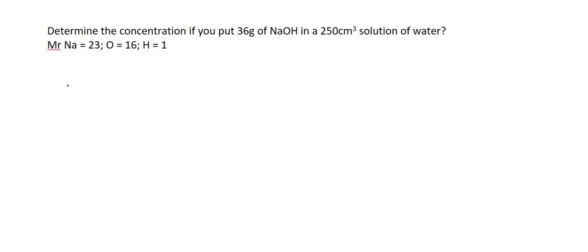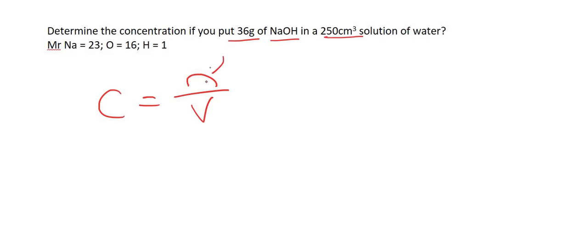Alright, so let's practice. Determine the concentration if you put 36 grams of NaOH in 250 cm³ of water. We know that concentration equals moles divided by volume — it's given on the formula sheet — so we need to work out moles. They've given us the mass, so we can use n = m/Mr. We should know this off by heart.